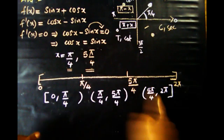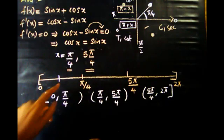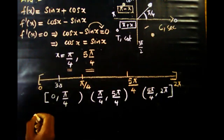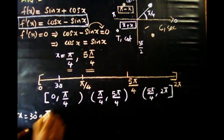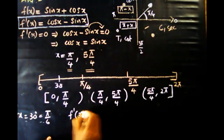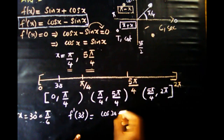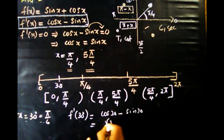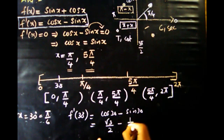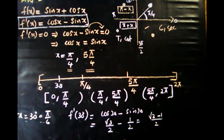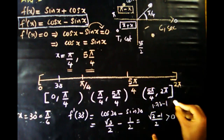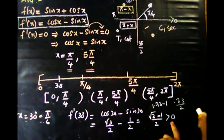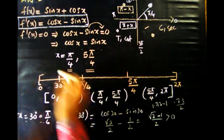Now let's check each interval. For the first interval, we substitute x = 30 degrees. So f'(30°) = cos 30 minus sin 30 = root 3 by 2 minus 1 by 2 = (root 3 minus 1) by 2. Since root 3 is approximately 1.73, this gives 0.73 divided by 2, which is a positive quantity. So the function is increasing on this interval.